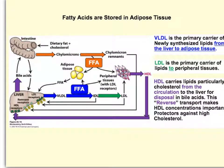Starting with absorption in the intestine, we get chylomicrons, which are transported to the liver. From the liver, usually on LDL, transport goes to other peripheral tissues or to adipocytes. Adipocytes can send out free fatty acids that are usually associated with albumin as they travel back to the liver. Transport from peripheral tissues to the liver is usually associated with HDL — so LDL takes things away from the liver, and HDL takes things back.